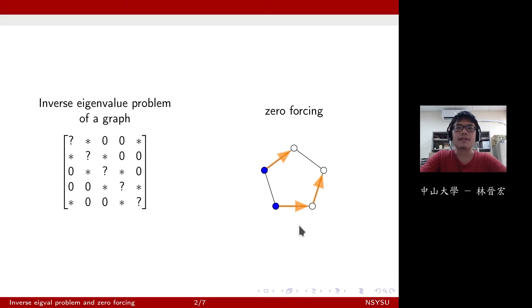On the other side, the zero forcing number, or zero forcing, is a color change process. At the very beginning, we will color every vertices. Some of them will be colored blue while others are white. And we are going to use what we called the color change rule to make more and more vertices blue. And so later on, we are going to describe the color change rule and describe zero forcing in more detail, and come back to the inverse eigenvalue problem of a graph and see its application.